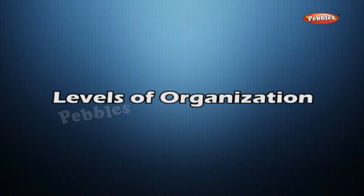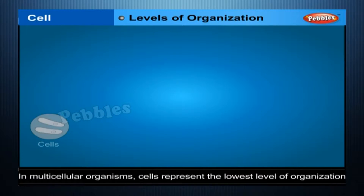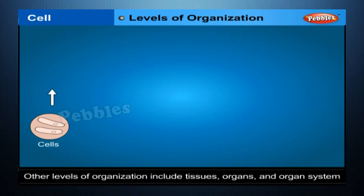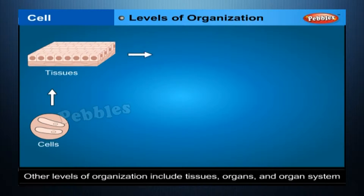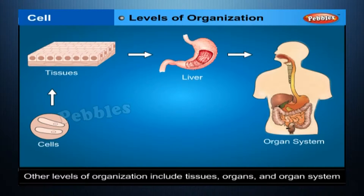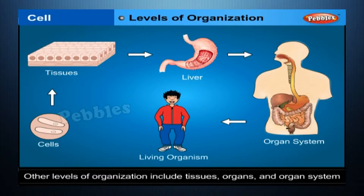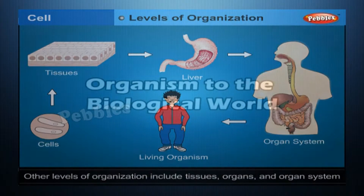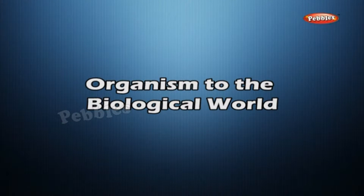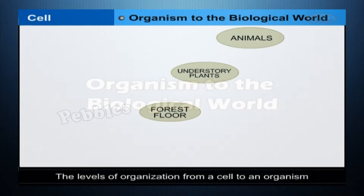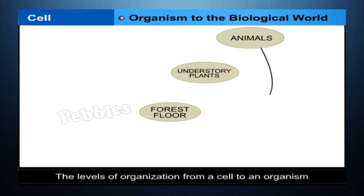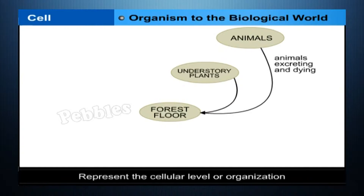Levels of Organization. In multicellular organisms, cells represent the lowest levels of organization. Other levels of organization include tissues, organs and organ systems. The organ systems get together to complete a living organism. The levels of organization from a cell to an organism represent the cellular level of organization.